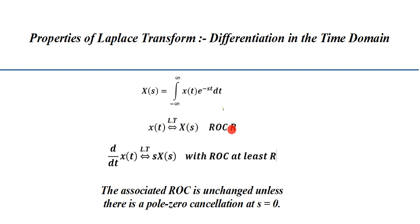and the ROC is represented by the letter R, then if there is a signal d/dt of x(t) — the derivative of x(t) — its Laplace transform is simply s·X(s), and the ROC is at least R. In some cases we get an ROC larger than R, so the associated ROC is unchanged unless there is a pole-zero cancellation.